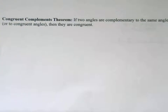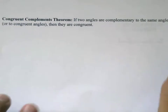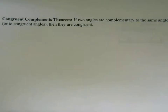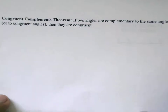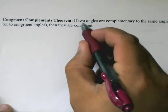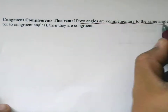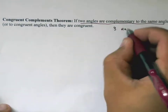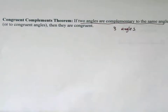Welcome geometry students to the lesson on the proof of the Congruent Complements Theorem. This theorem states: if two angles are complementary to the same angle, then they are congruent. We need three angles altogether — if that condition is true, then the two angles are congruent to each other.